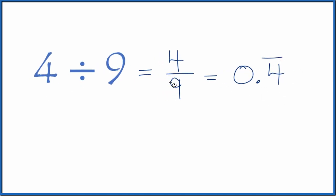So 4 divided by 9 is equal to the fraction 4 ninths, or the decimal 0.4, with the 4 repeating.